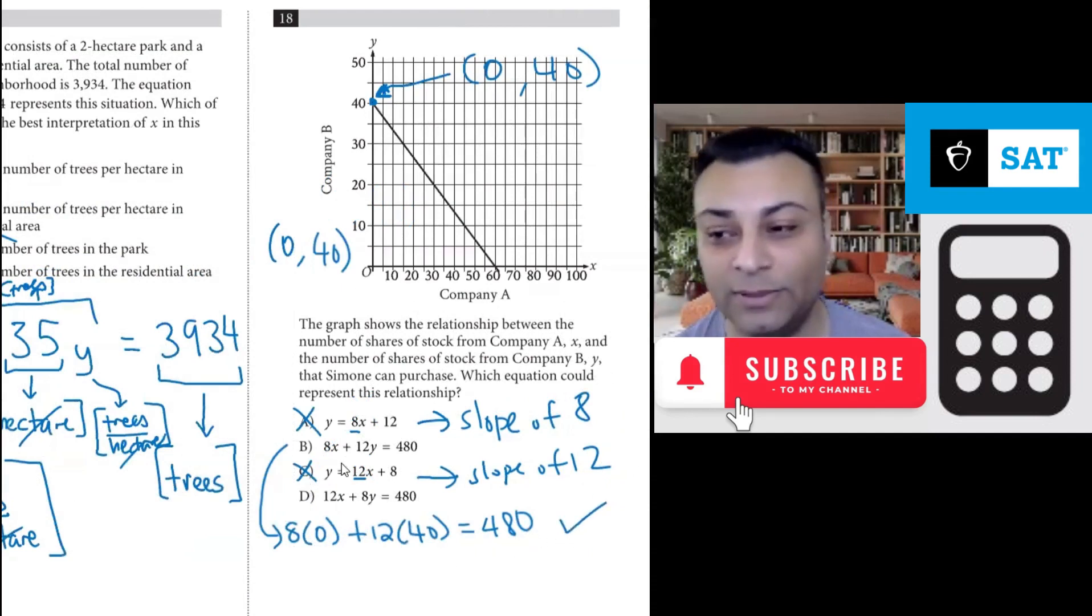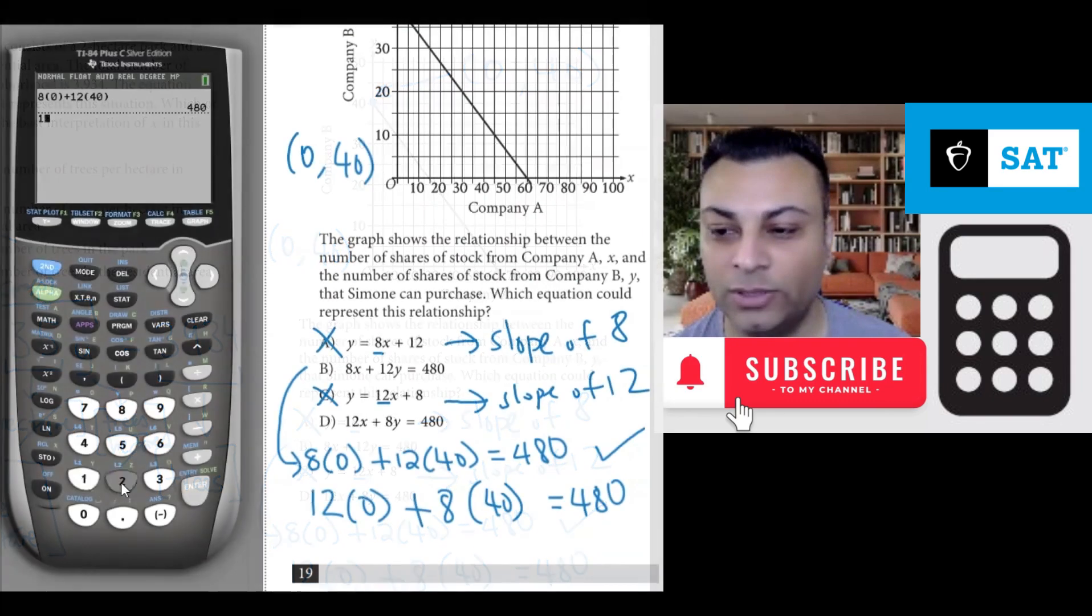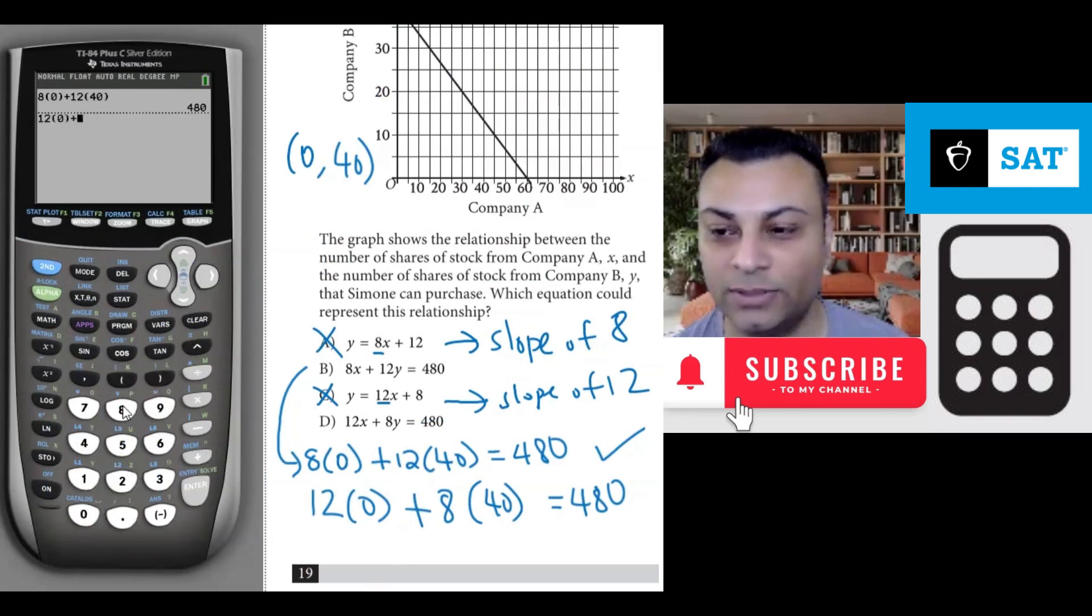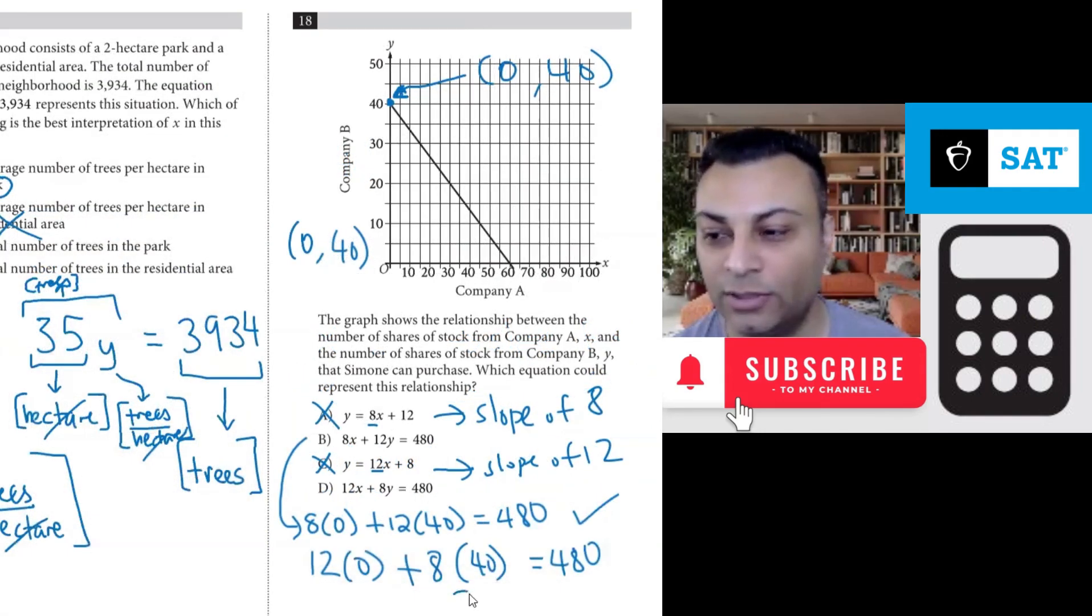So it should be b, but let's take a look at d. Let's use 12 times 0 plus 8 times 40. Let's check if that's 480. And let's get the calculator again. 12 times 0 plus 8 times 40. That's 320. So you wind up with 320 equals 480, which is false. So d is not it. This was option d. So the answer is b.